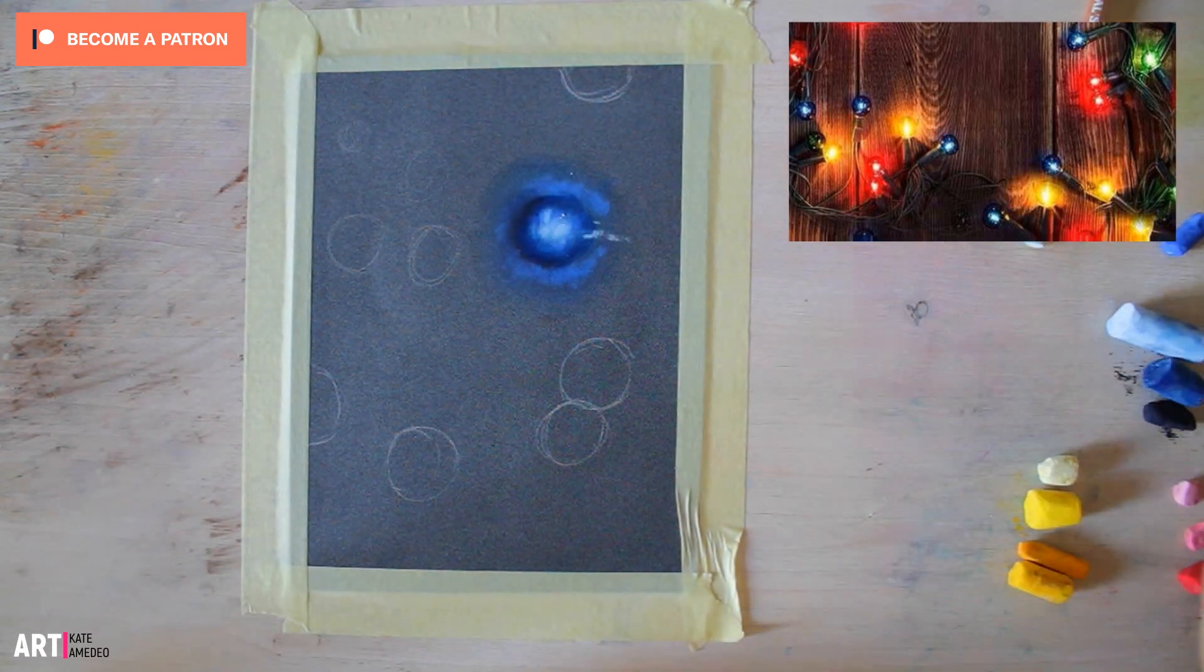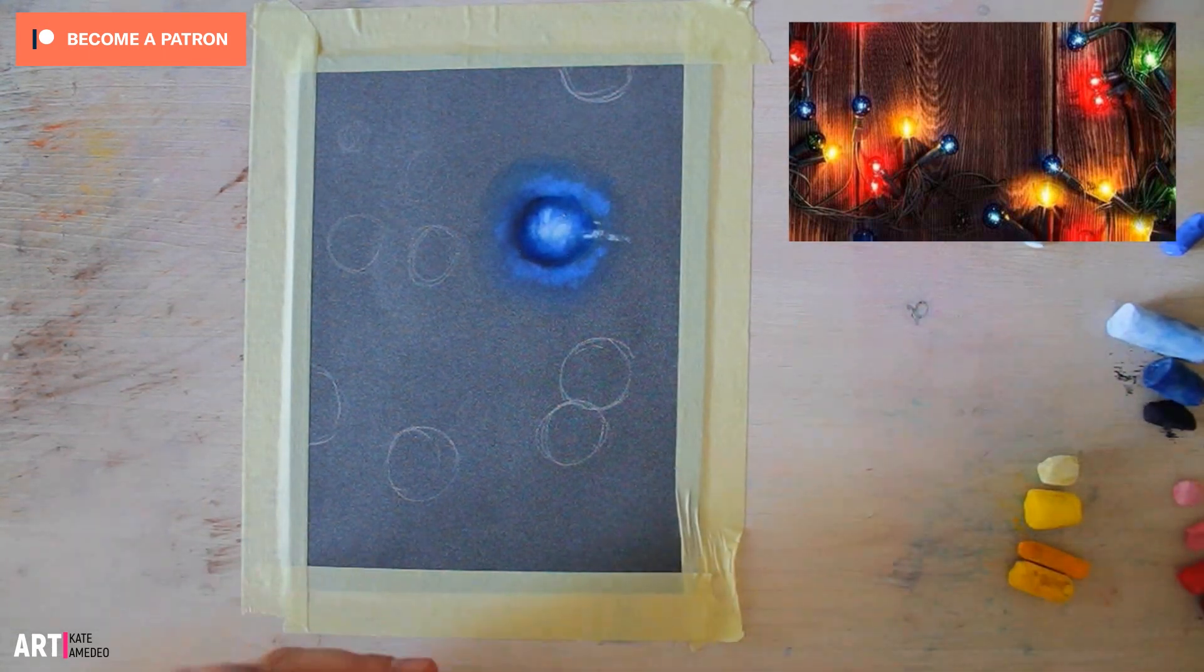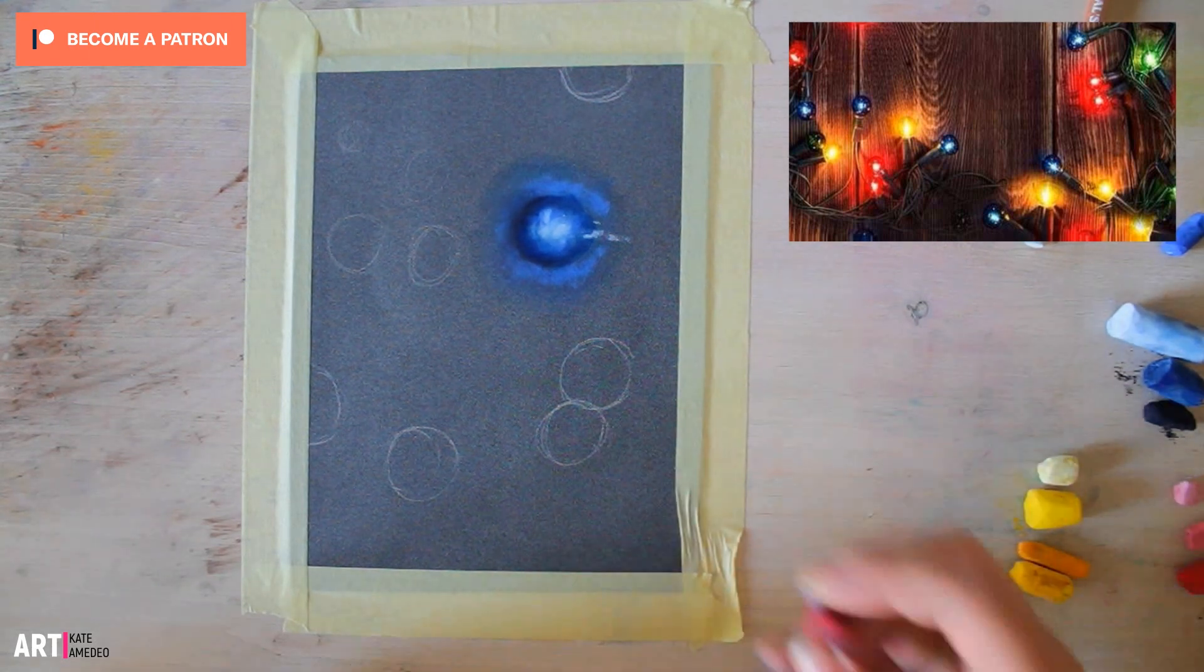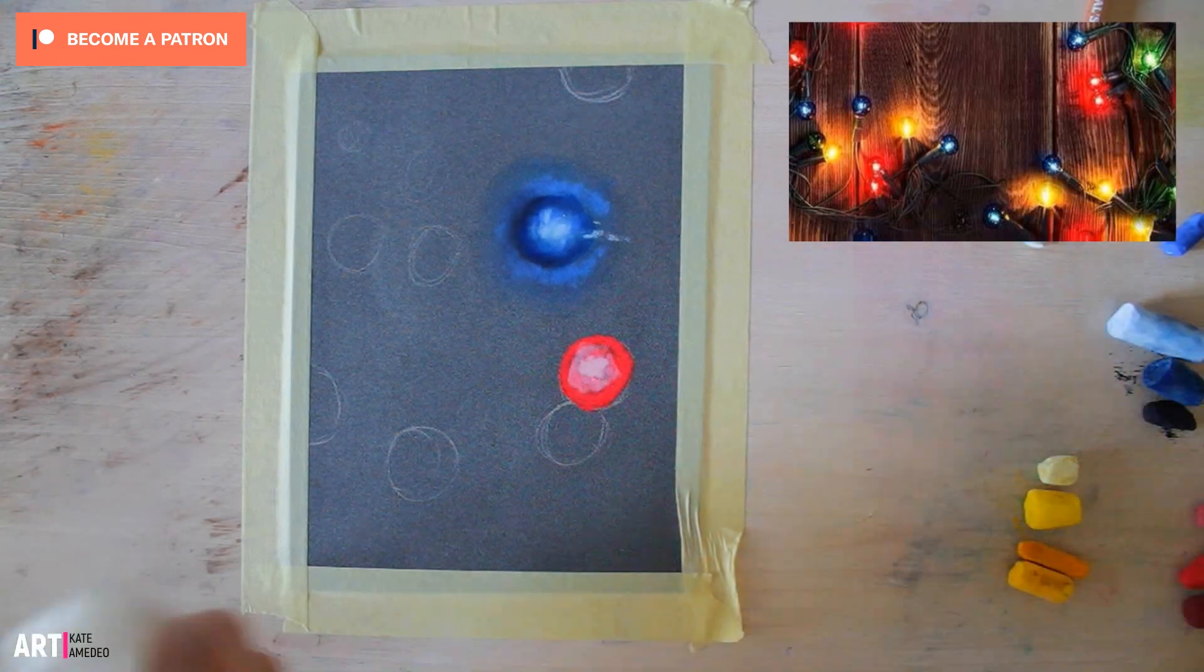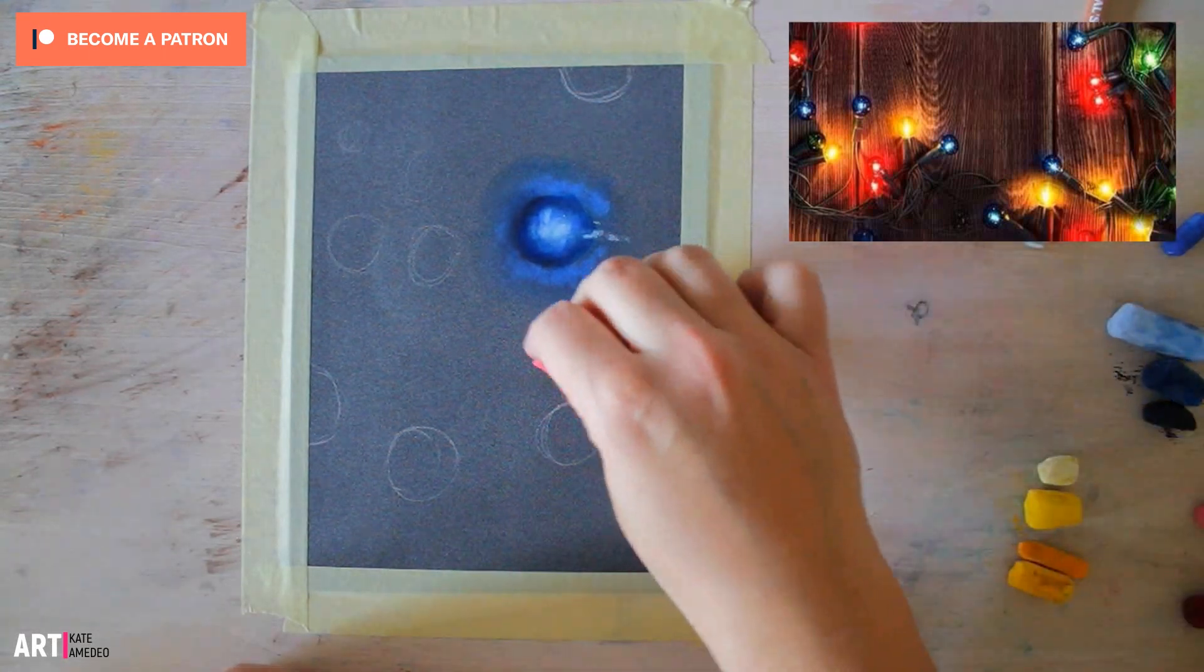And the most important thing, the most important tip that I can give you when drawing something that glows is to create the gradient of lights and darks always within that color family.